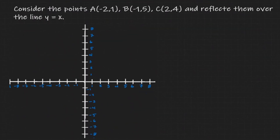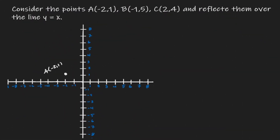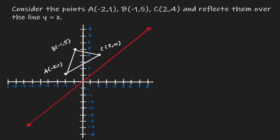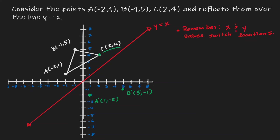Now let's look at one more example. Let's start by plotting the points, then connect those points, and draw our line y equals x. Reminding ourselves of the property: when we reflect over the line y equals x, the x and y values switch locations. Point A was defined as negative 2 comma 1, so the image will be 1 comma negative 2. Point B was at negative 1 comma 5, so the image will be 5 comma negative 1. Point C was at 2 comma 4, so the image will be 4 comma 2.